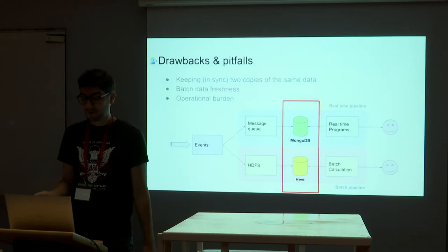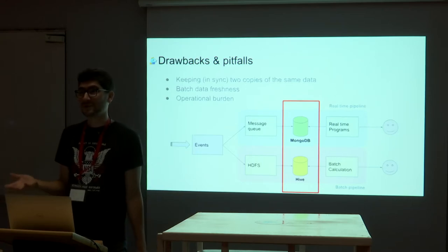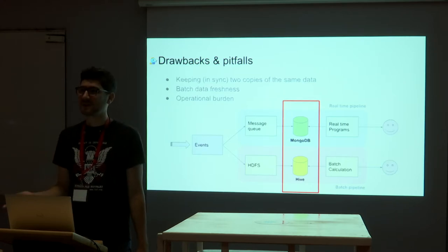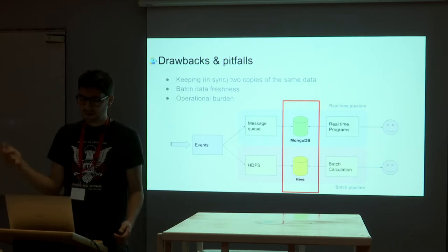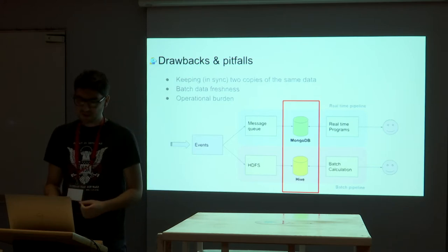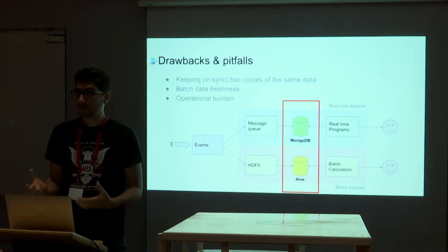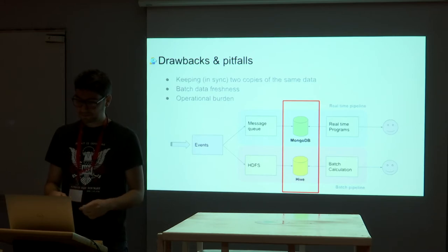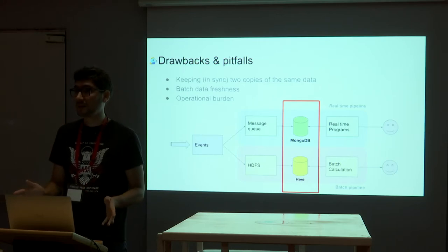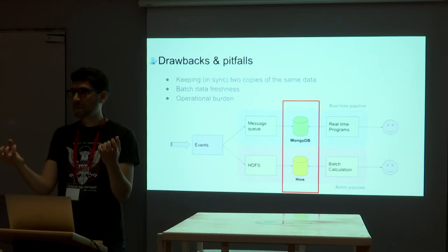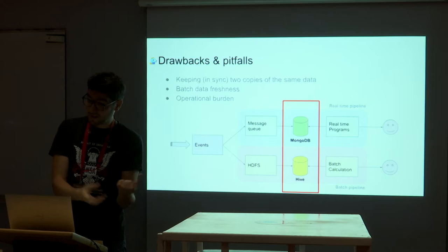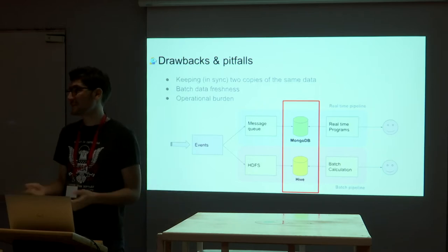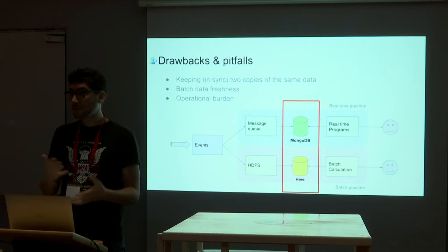What's not good with it? We have to store the same data twice and handle all the burden that comes with it: keeping data in sync, making sure it's consistent, and managing freshness of batch data. It's an operational burden. We do it because neither MongoDB nor Hive can sustain the read and write throughput that comes with real-time programs — which are sensitive to latency — and batch calculations — which are sensitive to mass and parallel reads. None of them can sustain both.